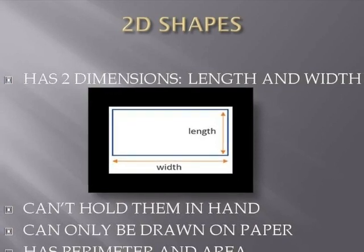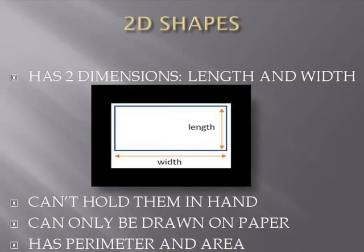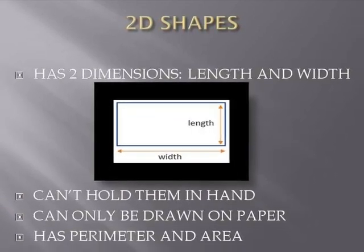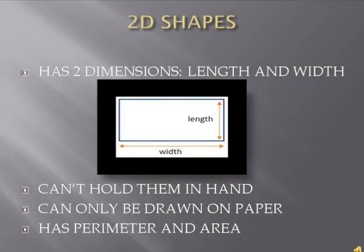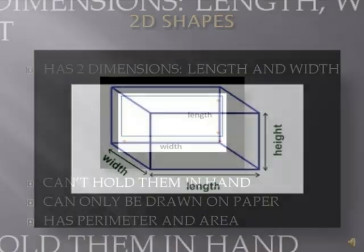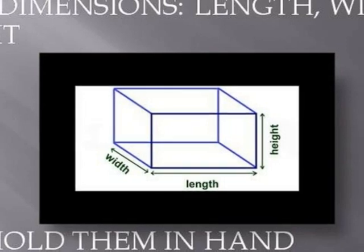Remember, paper is an example of a 3D shape, it is not a 2D shape. 2D shapes have area and perimeter.